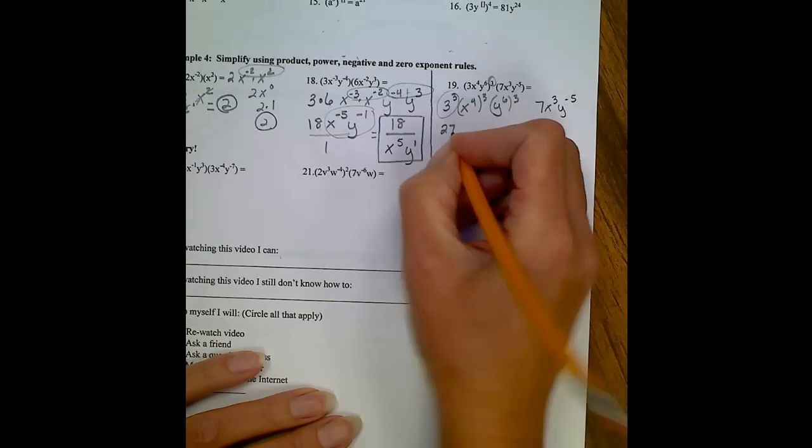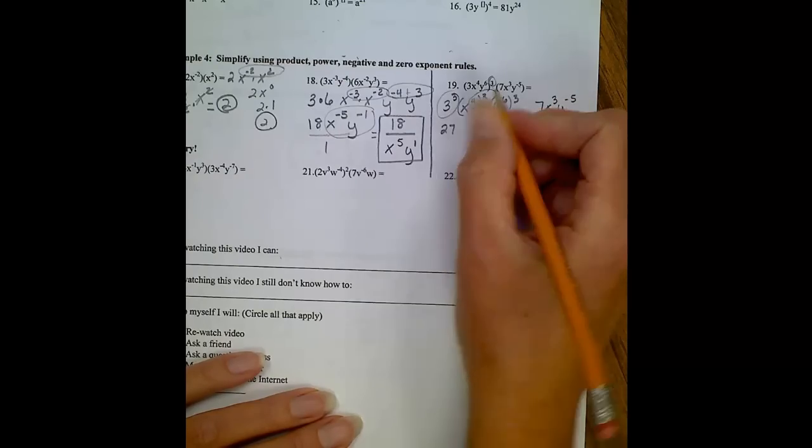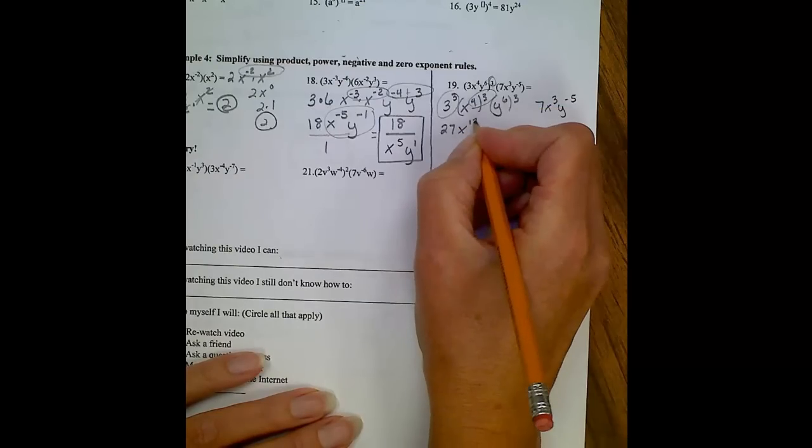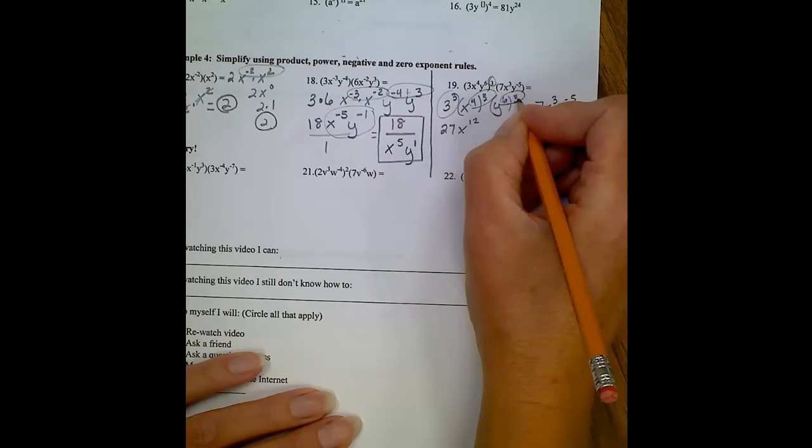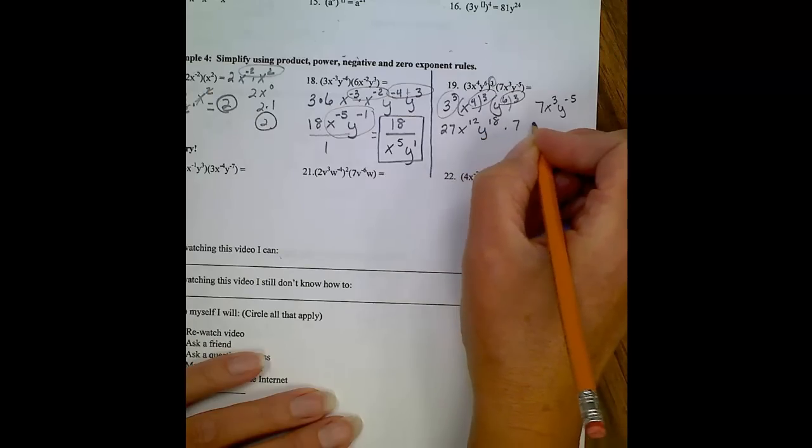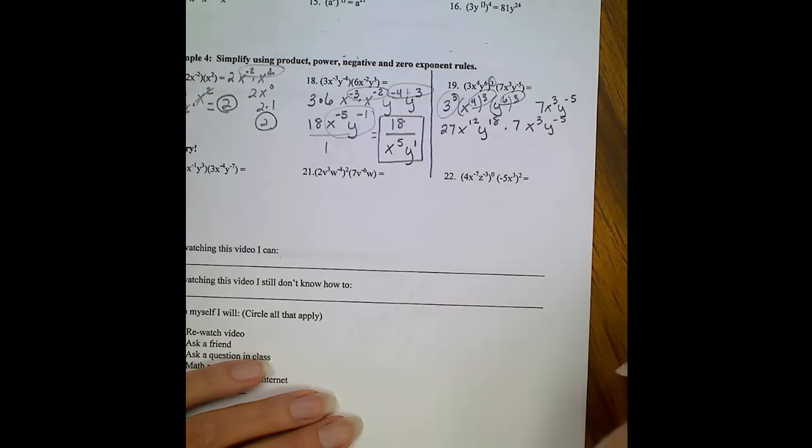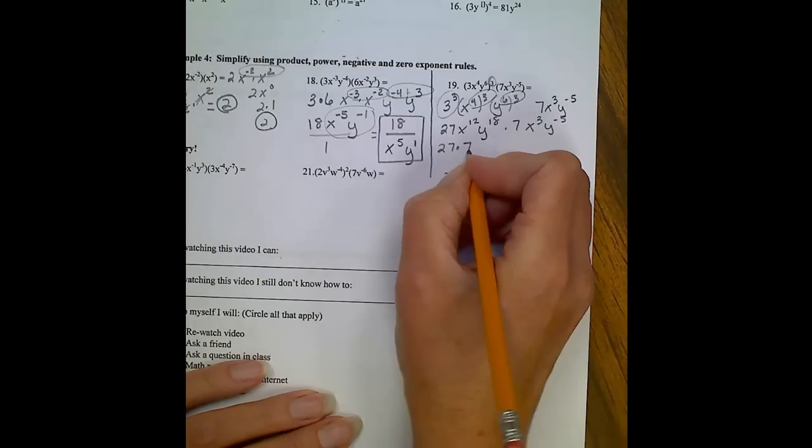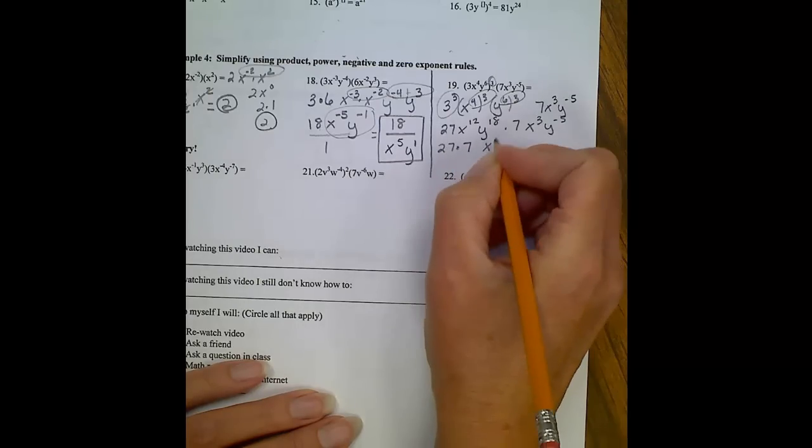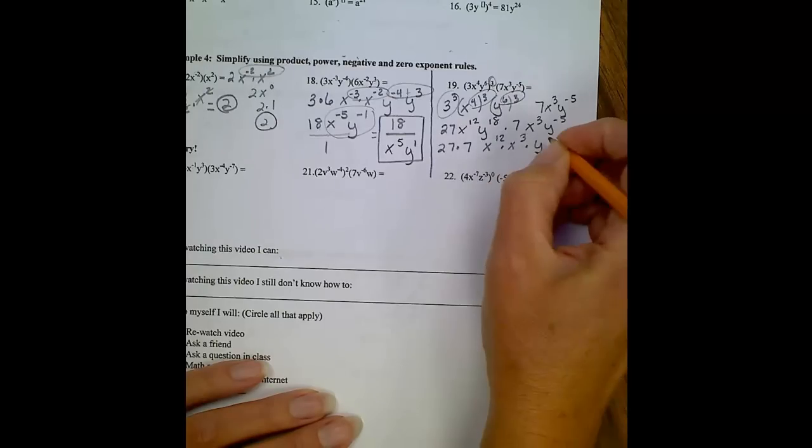Evaluating 3 to the 3rd, I will get 27. Raising a power to a power, when I multiply these exponents together, I will get x to the 12th, and raising y to the 6th to the 3rd, multiplying these two exponents together, we'll get y to the 18th. And then bringing in the 7, x to the 3rd, y to the negative 5th. Regroup them: 27 times 7, get those x's together, x to the 12th times x to the 3rd, and put those y terms together. You get y to the 18th times y to the negative 5th.